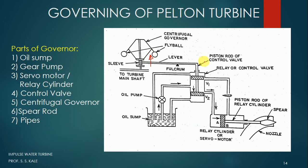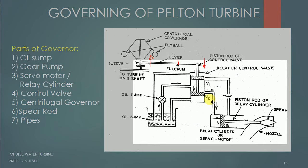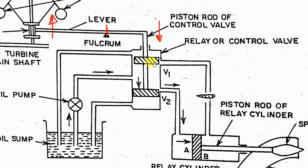As the lever moves up on the governor side, the other side moves down due to the fulcrum. When that side moves down, the two pistons of the control valve also move in the downward direction. In the current neutral position, both valves V1 and V2 are closed. When the pistons move down, the oil coming from the pump now flows to valve V2.